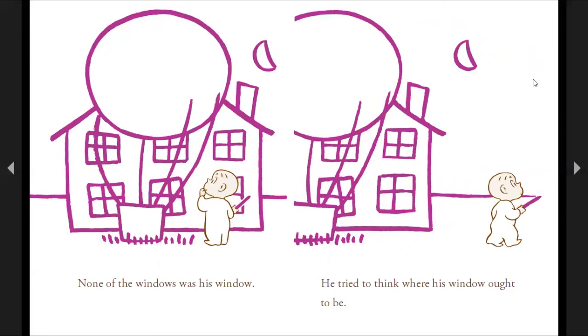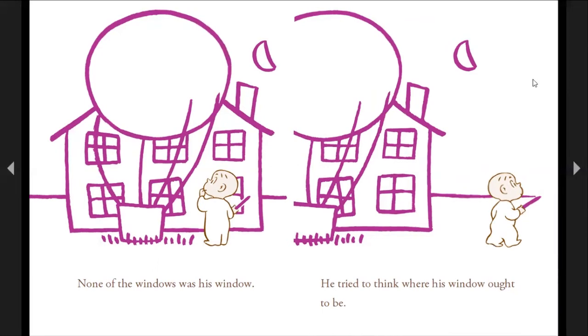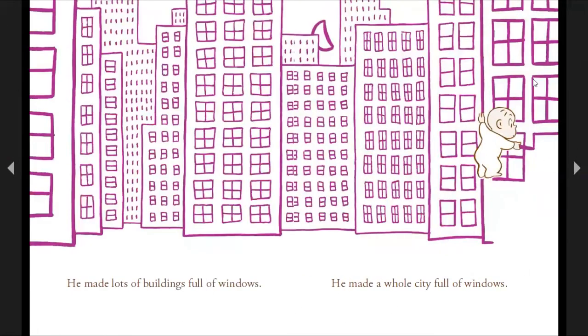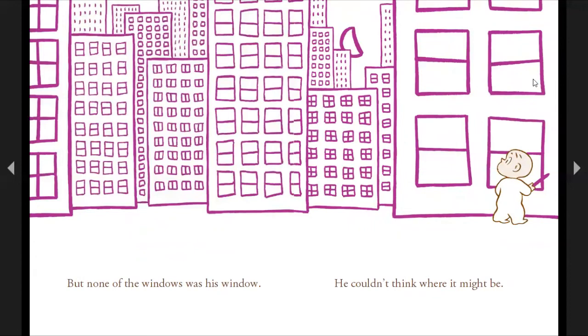None of the windows was his window. He tried to think where his window ought to be. He made some more windows. He made a big building full of windows. He made lots of buildings full of windows. He made a whole city full of windows. But none of the windows was his window. He couldn't think where it might be.